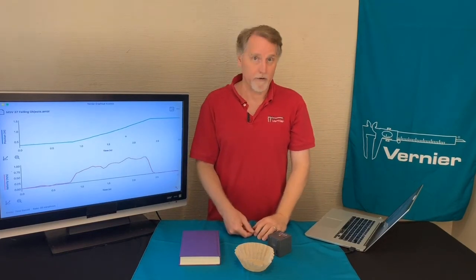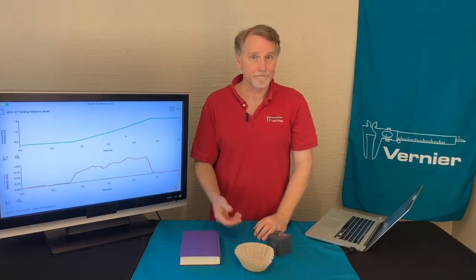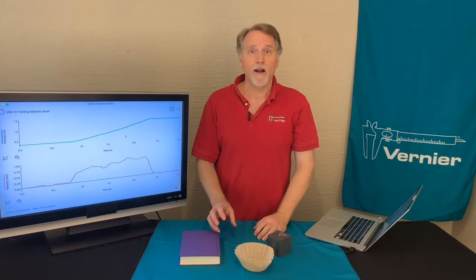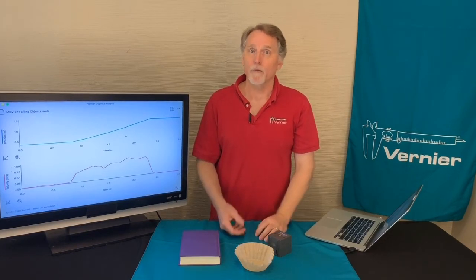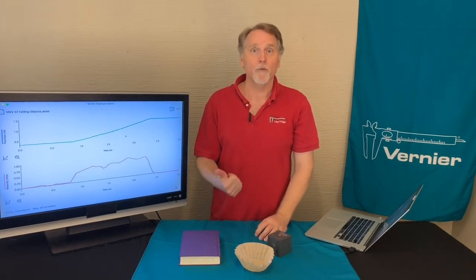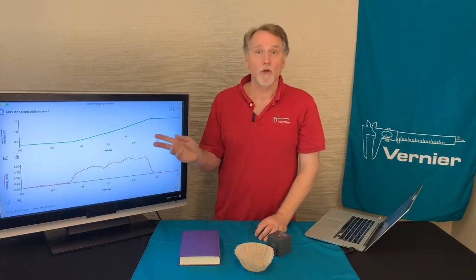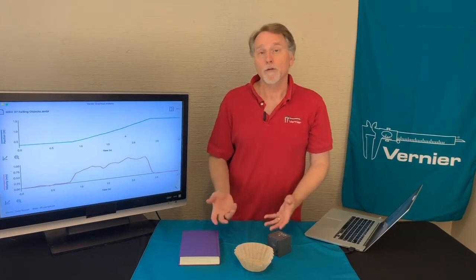The lower graph is the velocity graph, based upon the same data. So one graph shows position and the other shows velocity, and at this point we're looking at just the coffee filter.